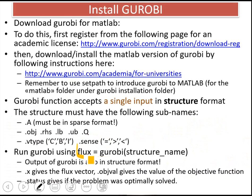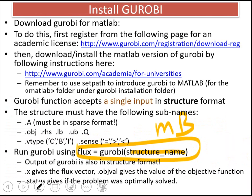This is how you will run Gurobi: your structure name — let's say MB — is the main variable name, then Gurobi, and the output. The output is also in structure format. So you will get the main variable flux. If you print flux.x, it will give you the flux vector. If you print flux.objval, it will give you the value of the objective function. If you print flux.status, it will tell you if the problem was optimally solved or not.